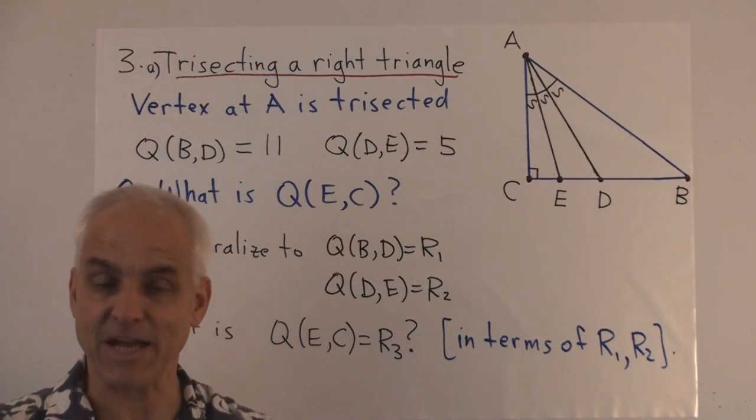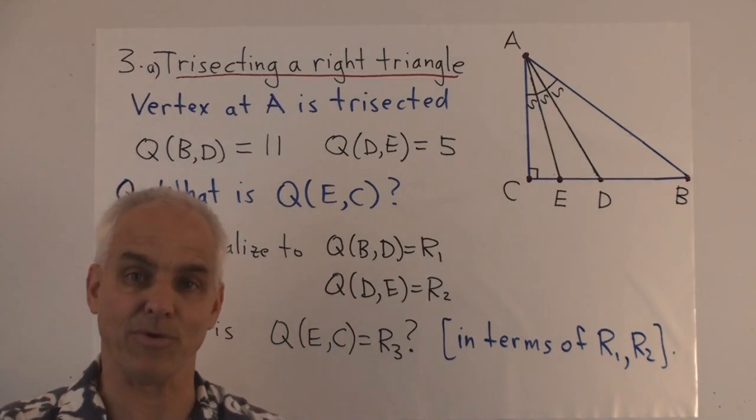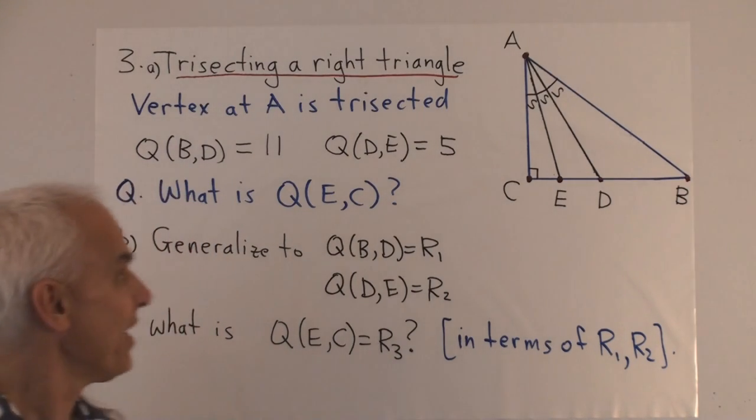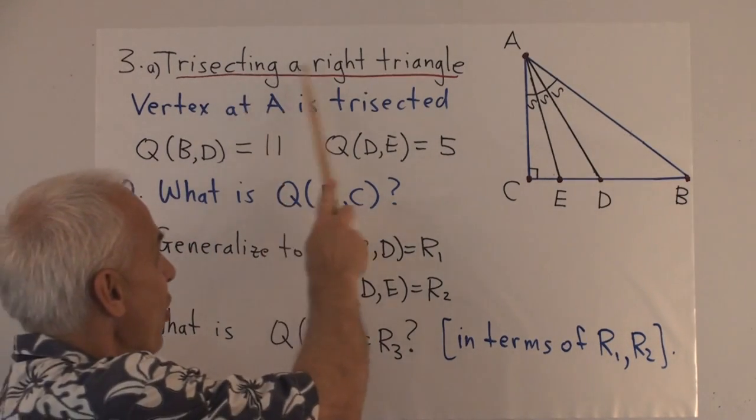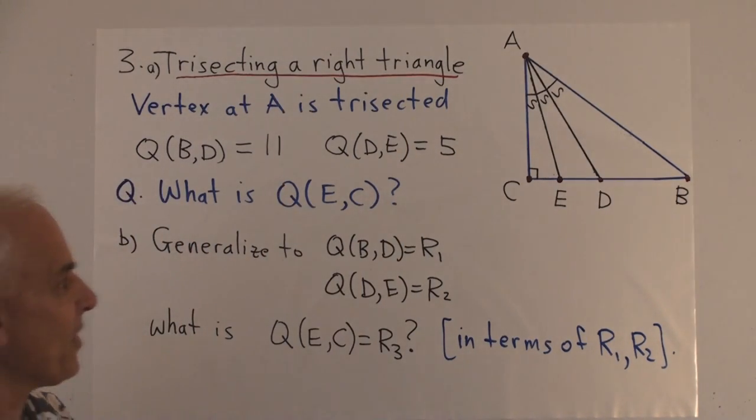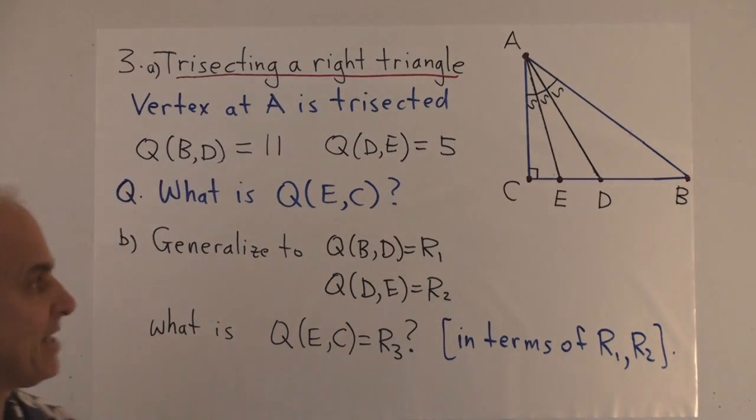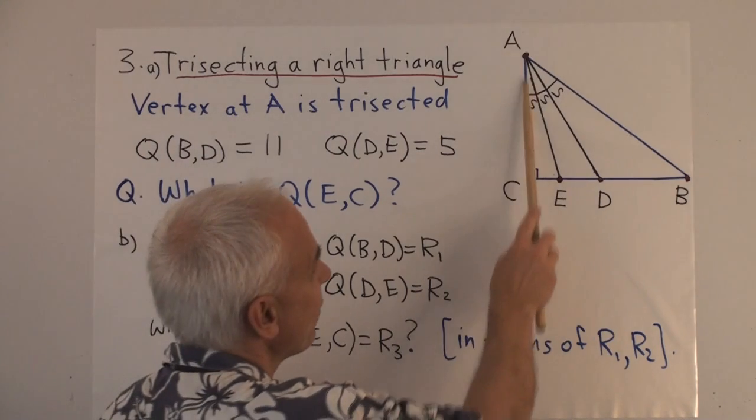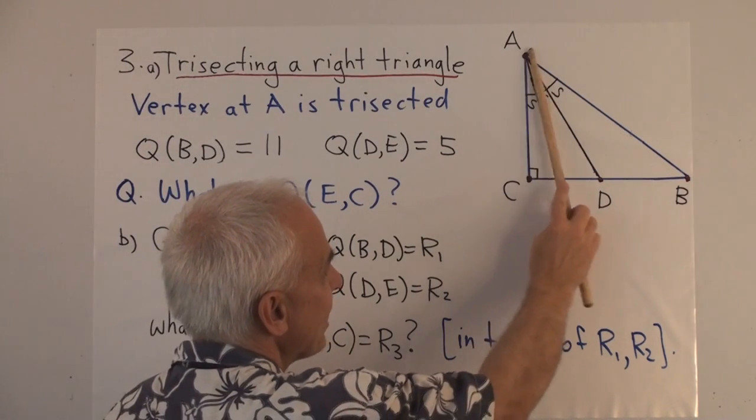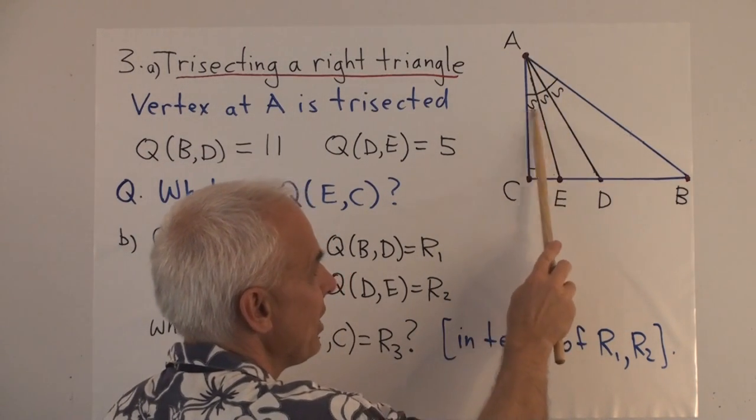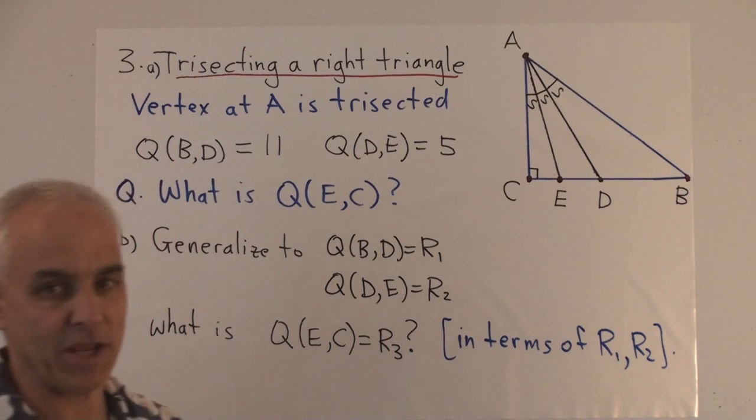Our third problem was actually suggested to me by a reader or a listener of these videos. It's called trisecting a right triangle. So here's a right triangle A, B, C with a right vertex at C. And we imagine that this vertex at A is trisected by these two lines, so equal spreads, or if you prefer, equal angles.